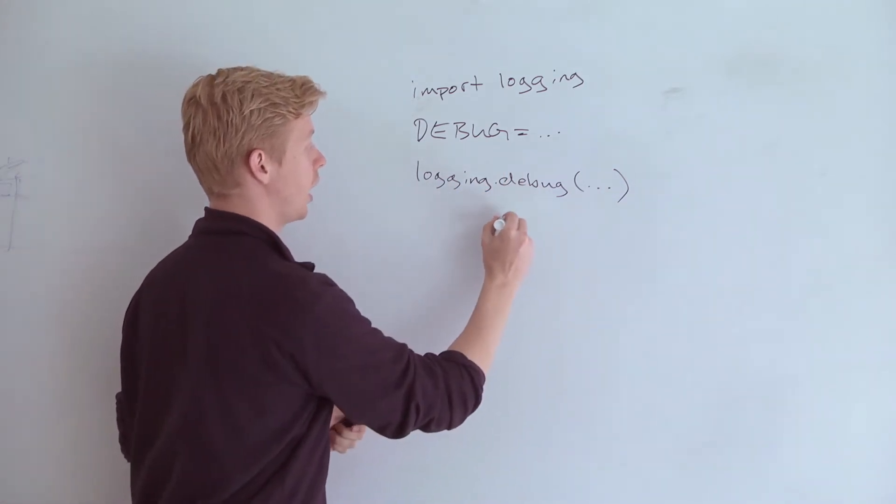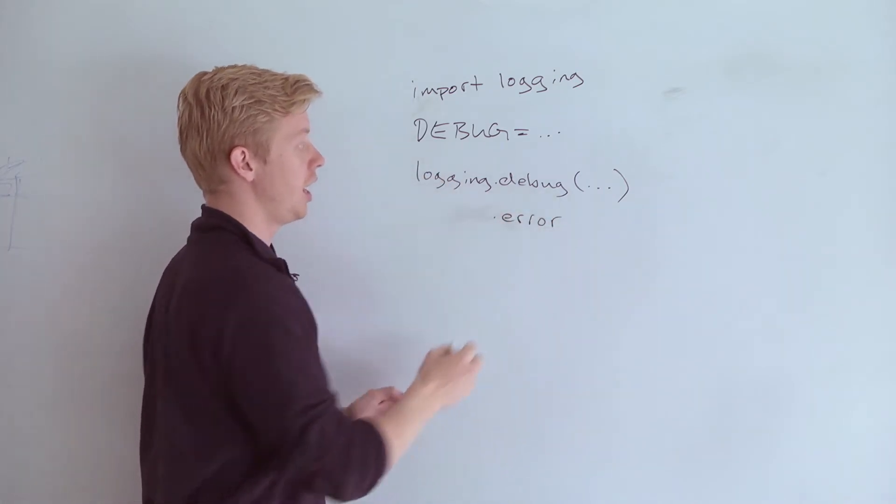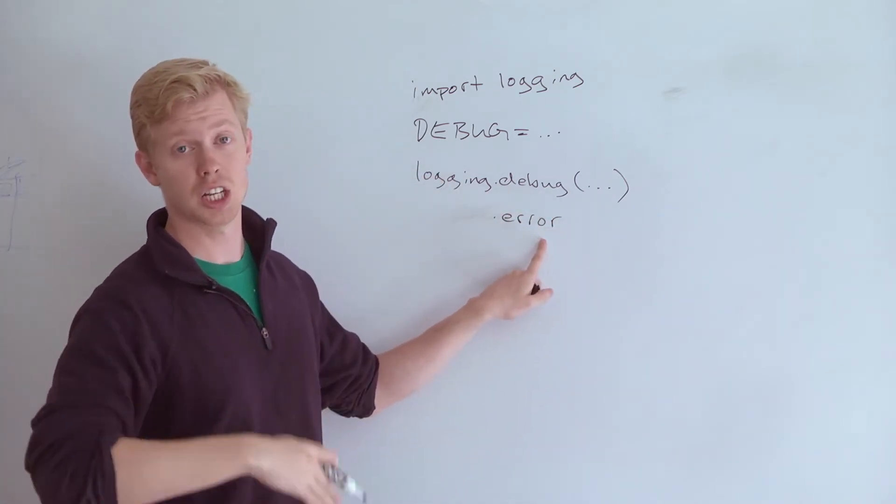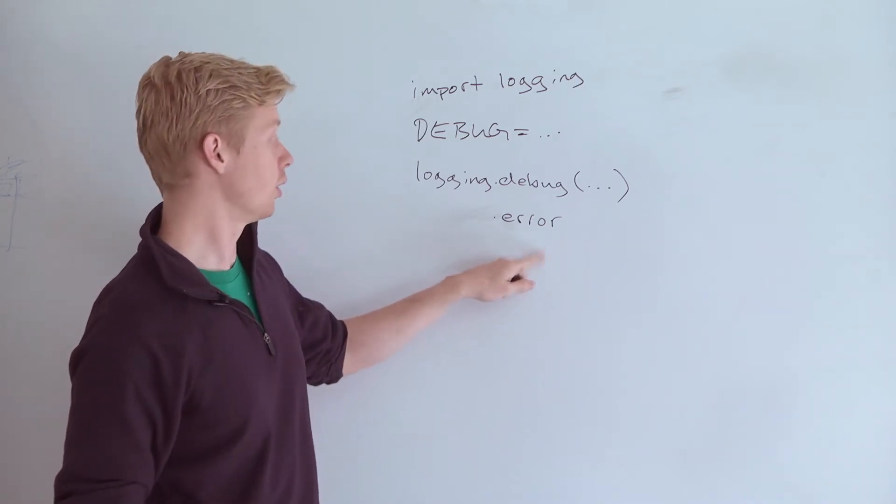Now you can also say .error, logging.error, and this will print in production and in development. And so this is really handy.